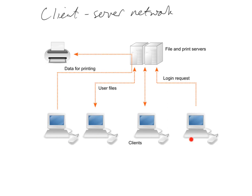The advantage of this is that clients can use any of the resources on the network that are on the server. For example, we could have a centrally placed printer — like we do have in school. The client can send a request for printing which goes to the server, the server can route that through to the printer, and then it gets printed off.